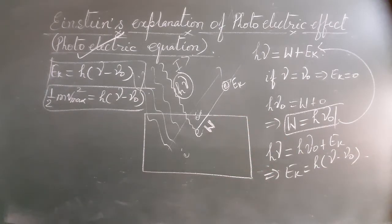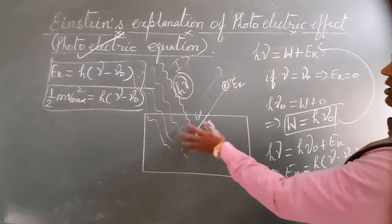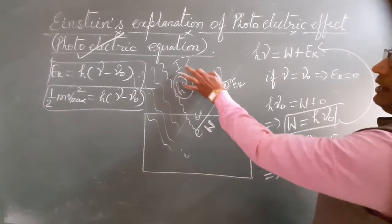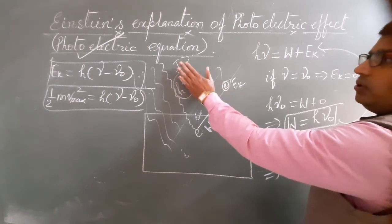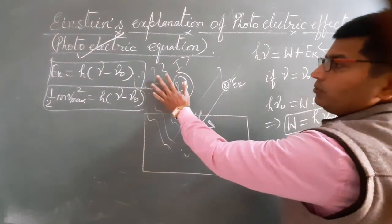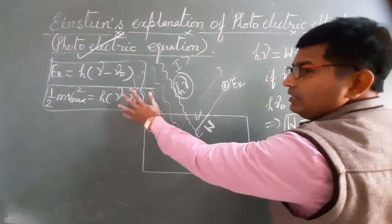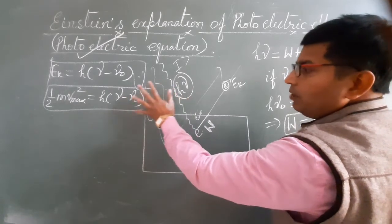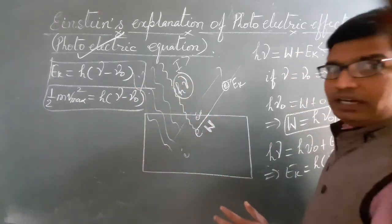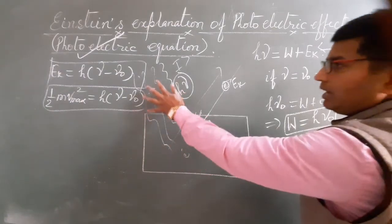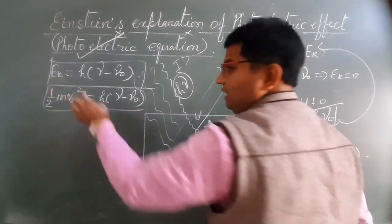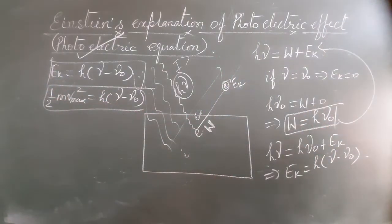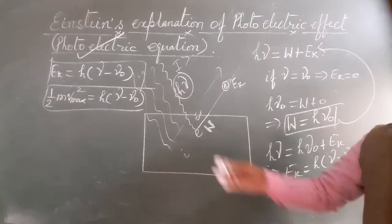Second? The energy of emitted photoelectron is independent of intensity. When you change intensity, only number of photons increase. When number of photons increase but their energy doesn't increase, their frequency doesn't change, then emitted photoelectron's energy also doesn't change. This is the second law.